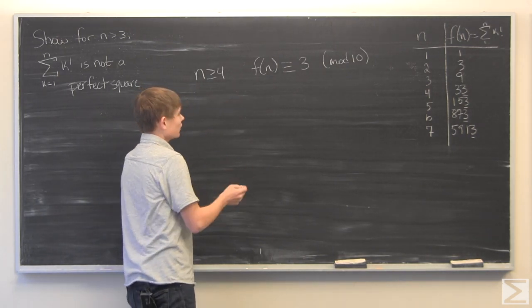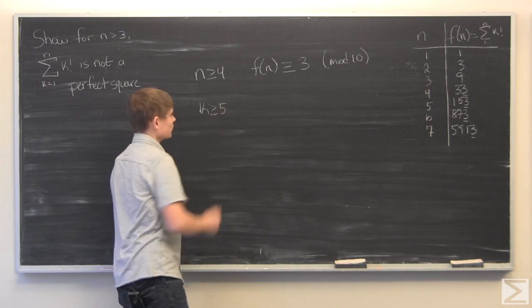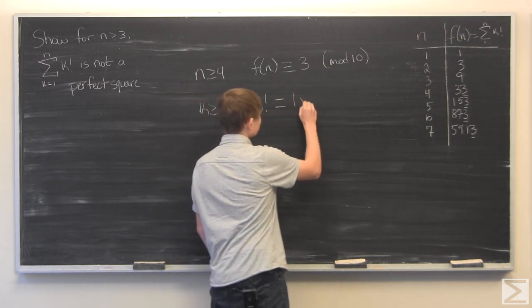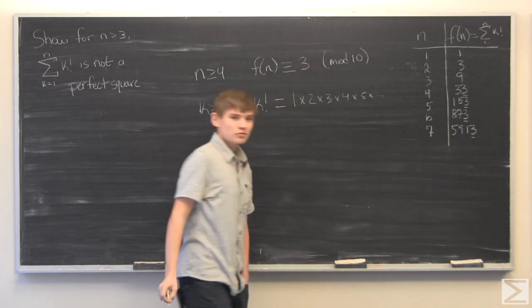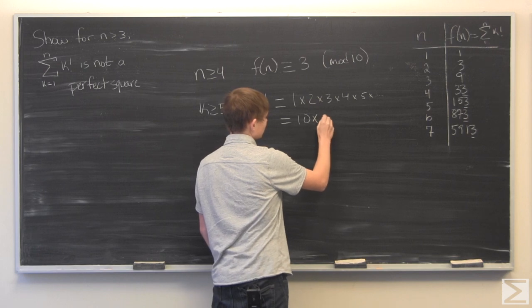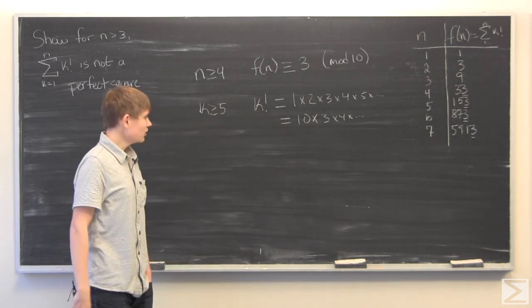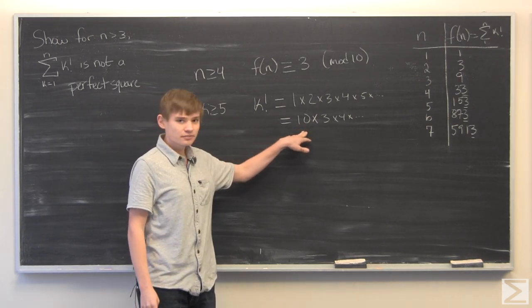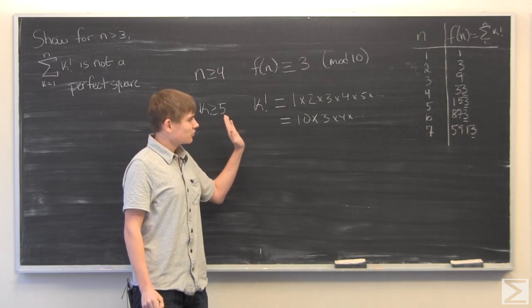Well for k greater than or equal to 5, k factorial will be equal to 1 times 2 times 3 times 4 times 5 and so on. Which you can see there's a 2 and a 5 so we can rewrite this as 10 times 3 times 4 and on and on. So k factorial for k greater than or equal to 5 has a factor of 10 in it which means that for k greater than or equal to 5 the factorial will end in a 0.